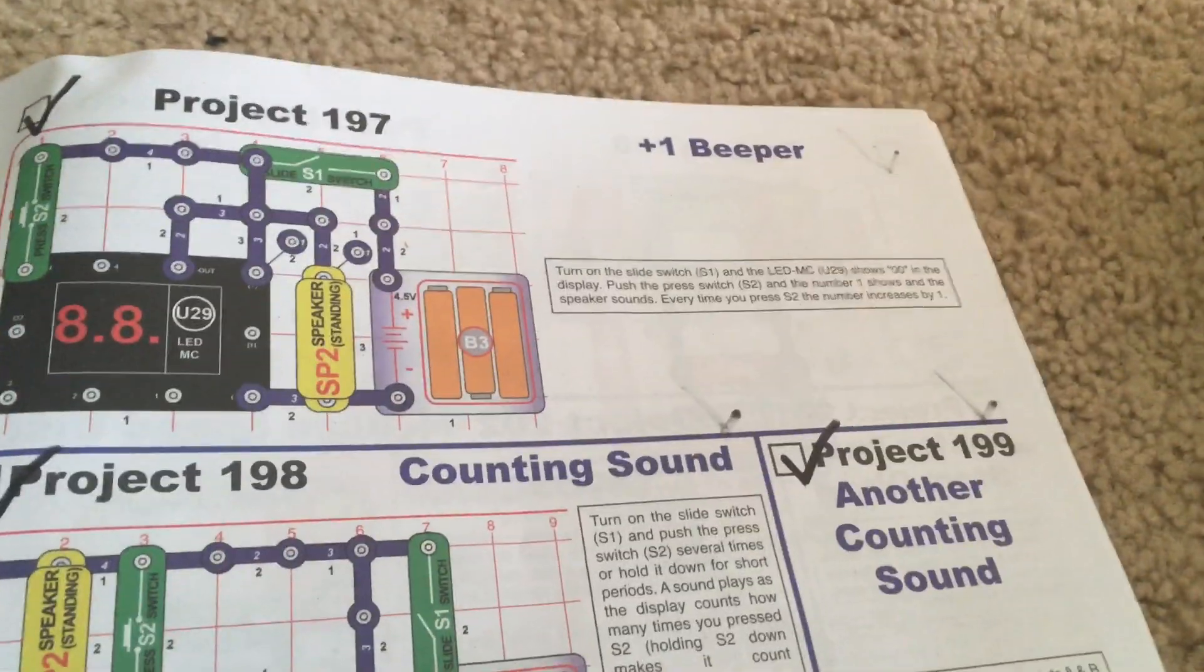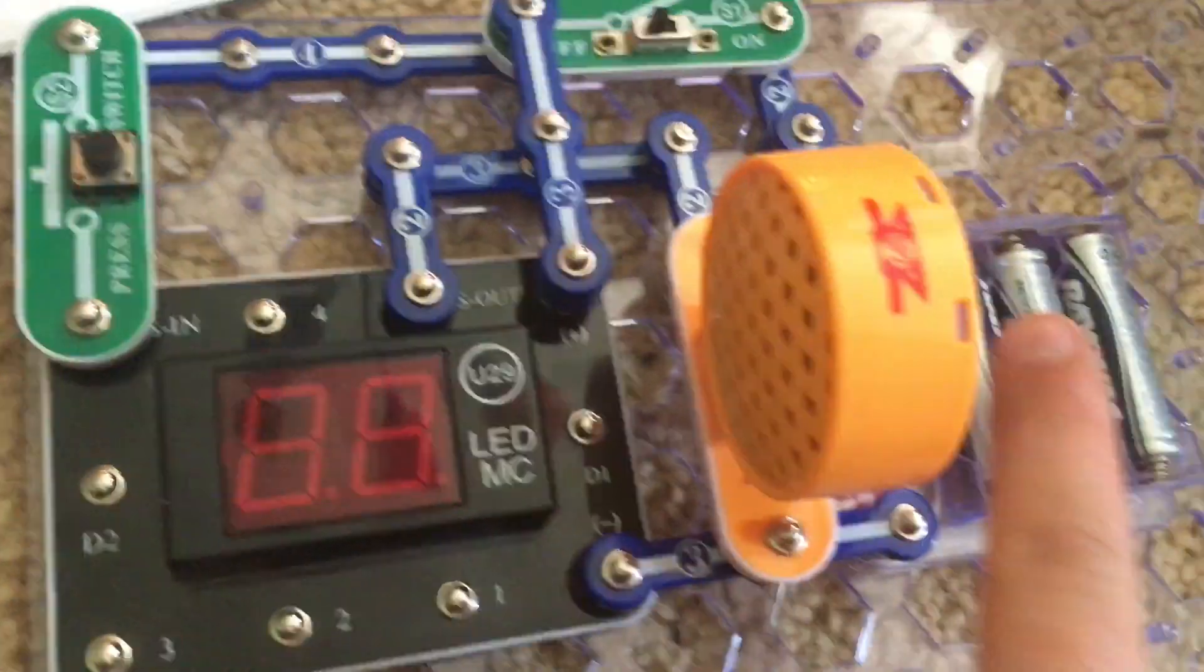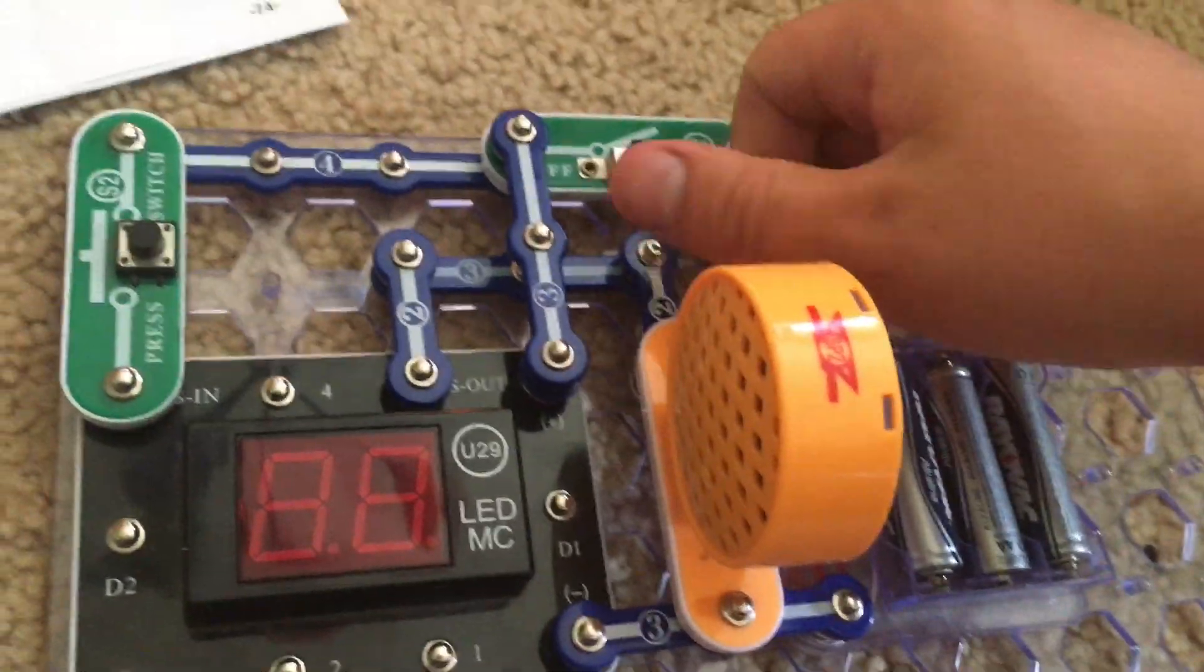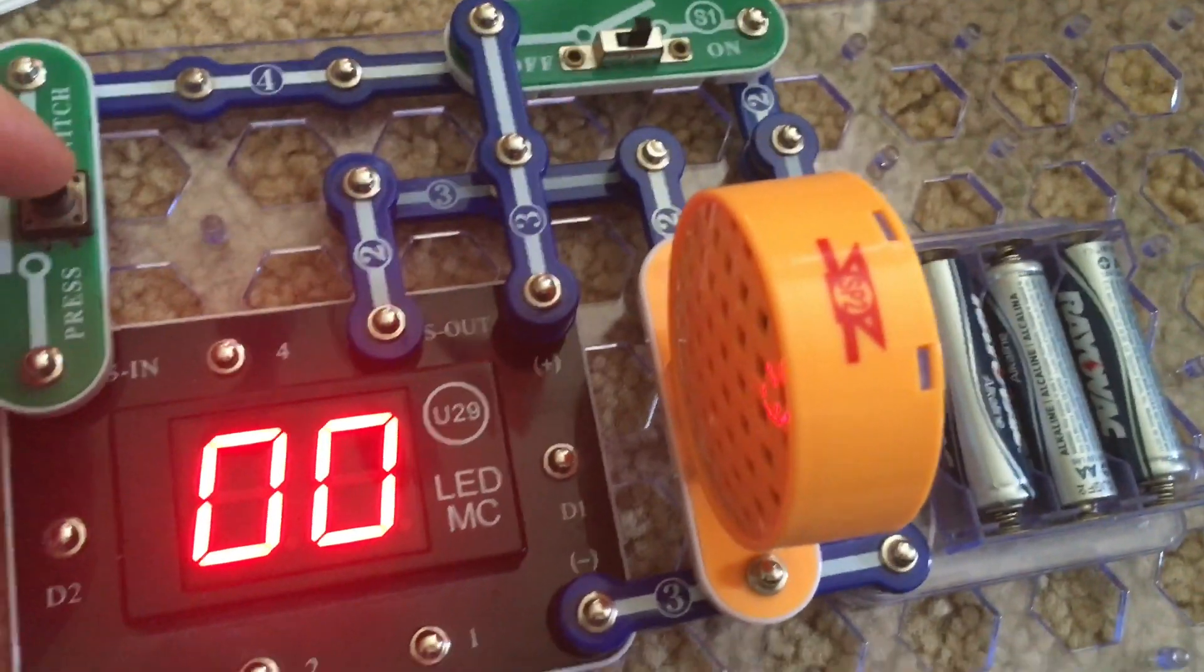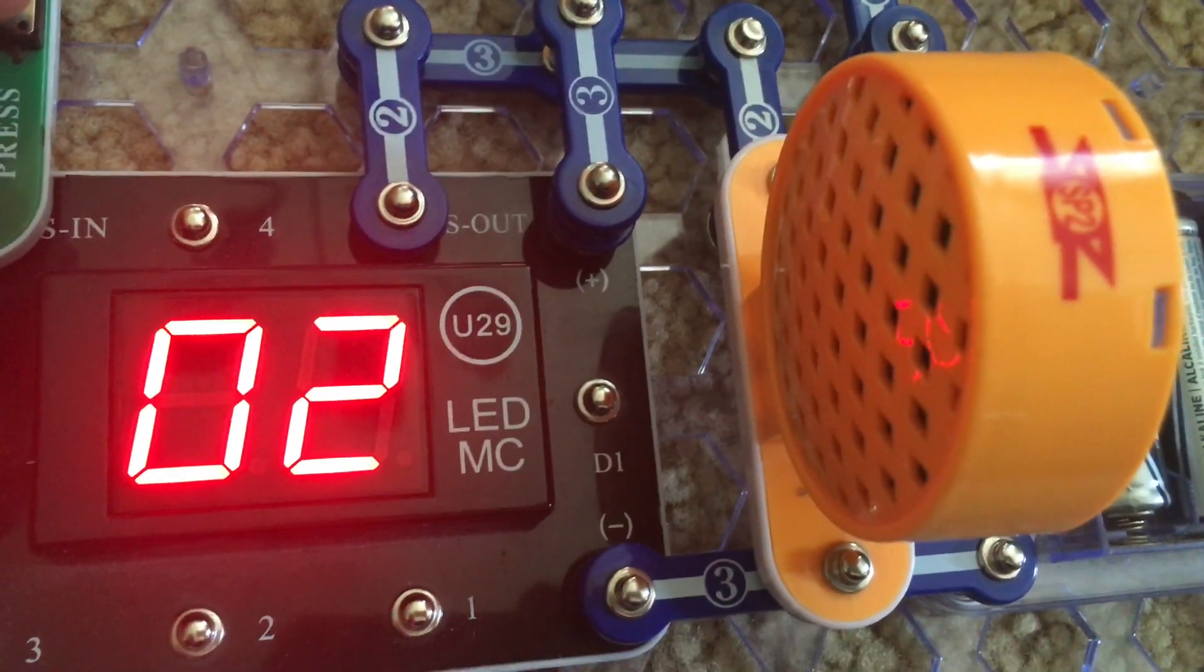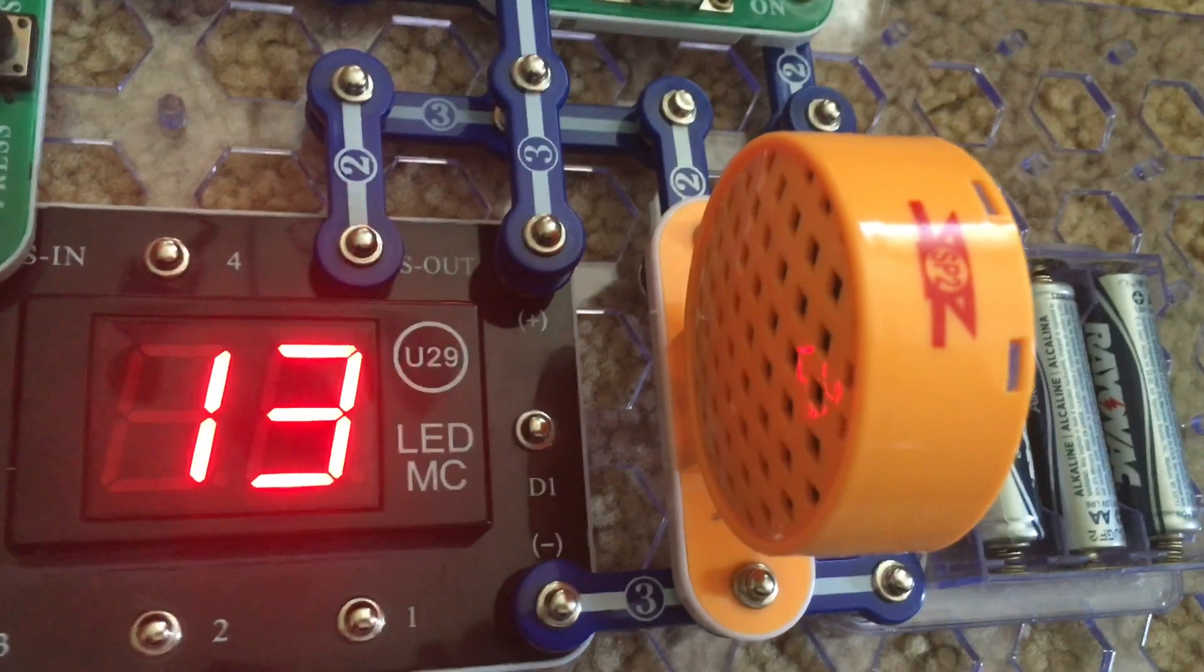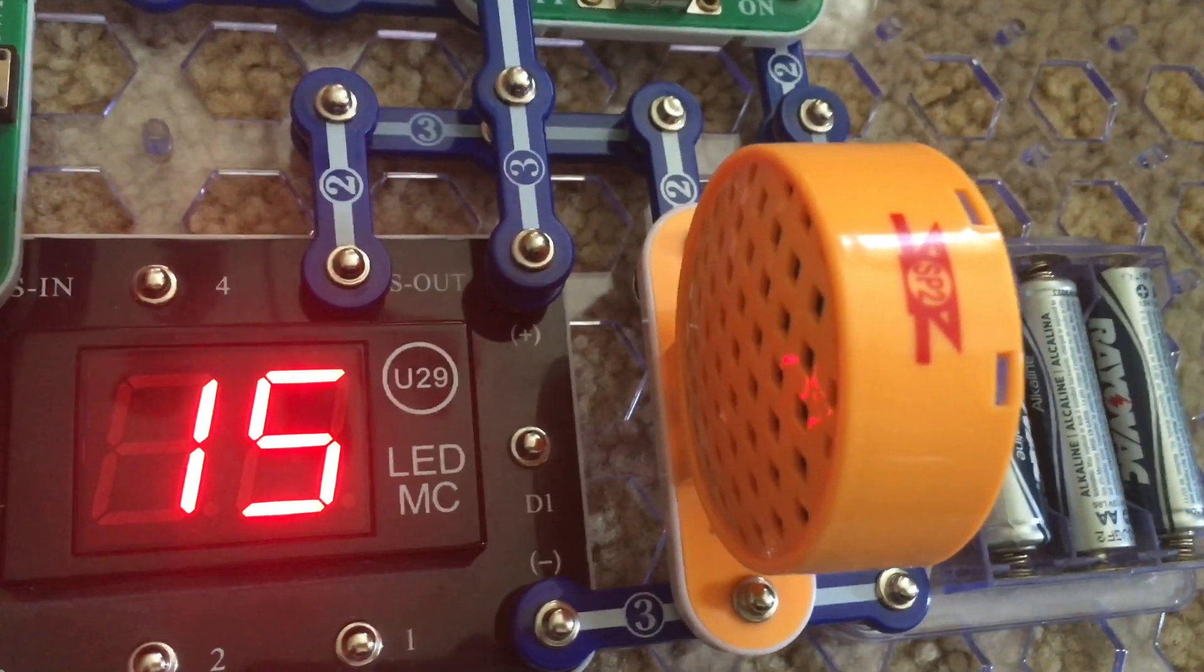Project 197 is plus one beeper. I added the speaker and modified this circuit quite a bit, and we will turn on the slide switch. Both digits show zeros and then we will push the press switch. The speaker beeps every time I hit the press switch and the display increases by one.